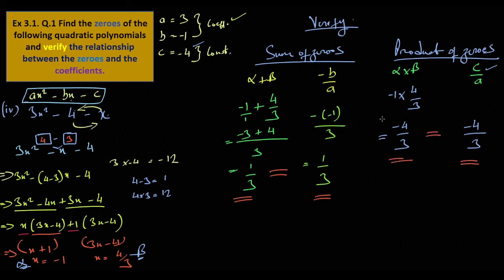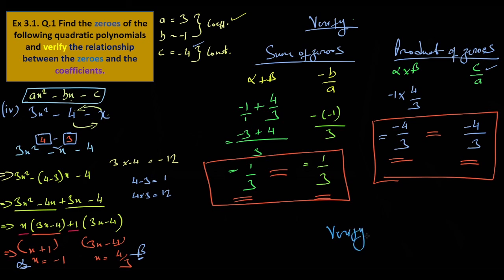C is minus 4, divided by A which is 3. Minus 4 by 3. It matches. We have verified both formulas.